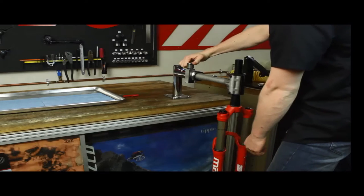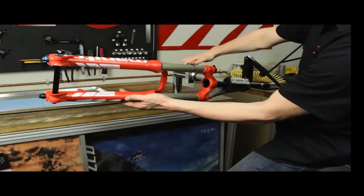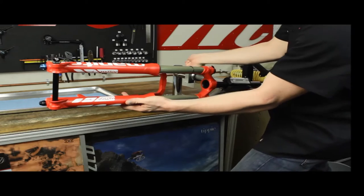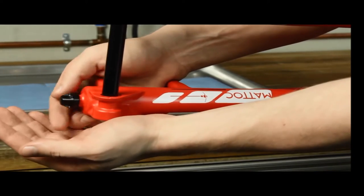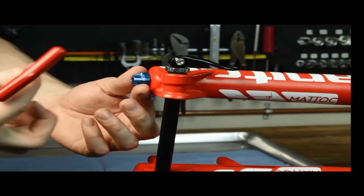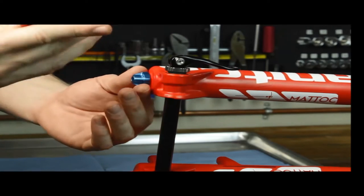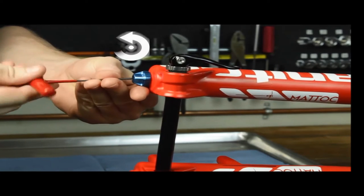Begin by clamping the Matic in a bike stand slightly on an upward angle. This slight upward angle will prevent the semi-bath fluid from leaking out of the fork during disassembly. Remove the black air valve cap by twisting counterclockwise. Remove the blue rebound knob by securing with two fingers and with a two millimeter Allen wrench, unscrew the bolt counterclockwise.